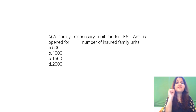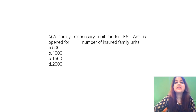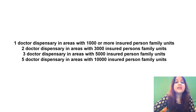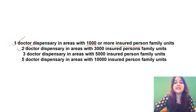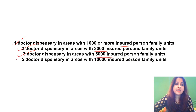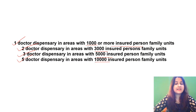A family dispensary unit under the ESI Act is opened for how many insured family units? One doctor dispensary in areas with 1,000 or more insured person family units; two doctors for 3,000; three doctors for 5,000; and five doctors for 10,000 insured person family units. This could also come as an MCQ.